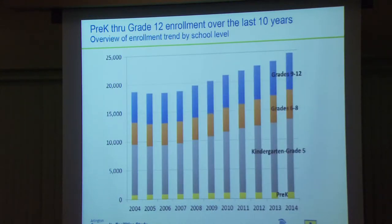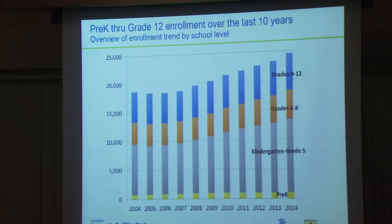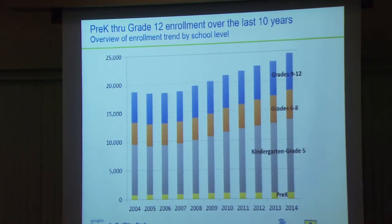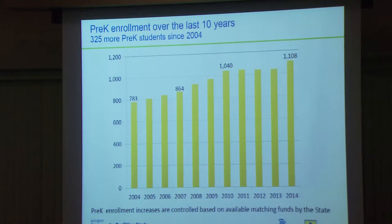Here's the same chart broken up by school level. At the bottom, pre-K is in yellow. Then kindergarten through fifth grade in gray — and thinking of that amusement ride, look at that slope going up. The more fun, the steeper the slope. Orange is middle school, and lastly high school is in blue.